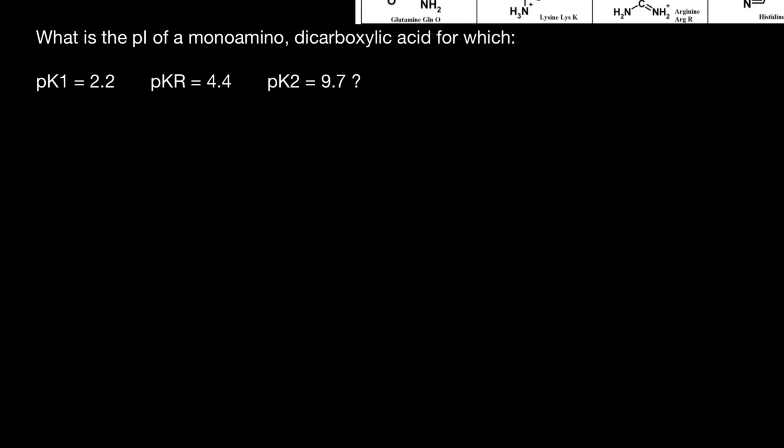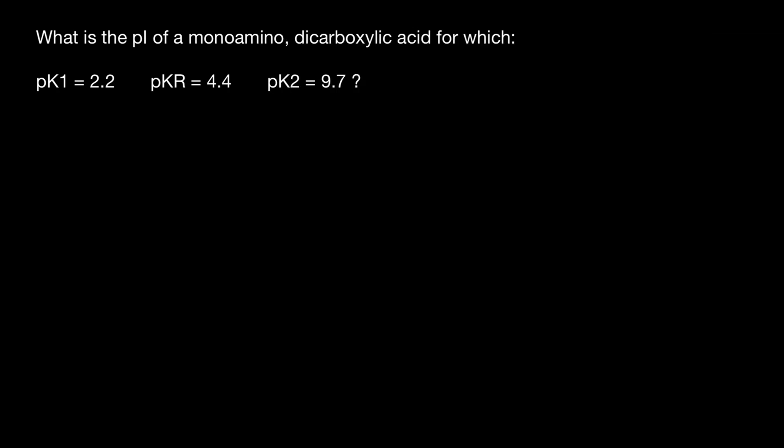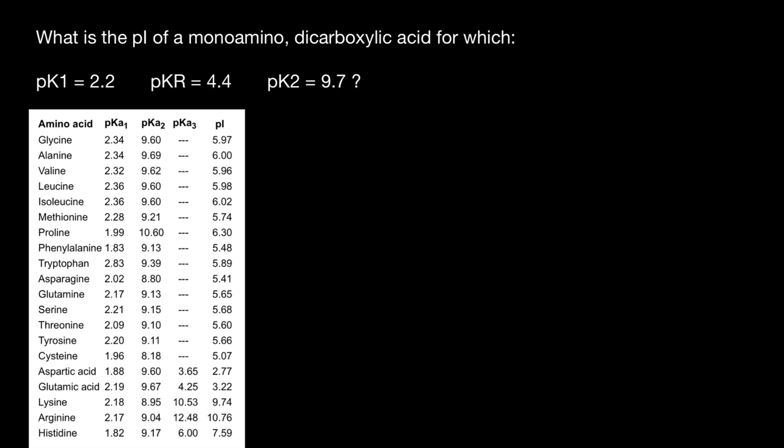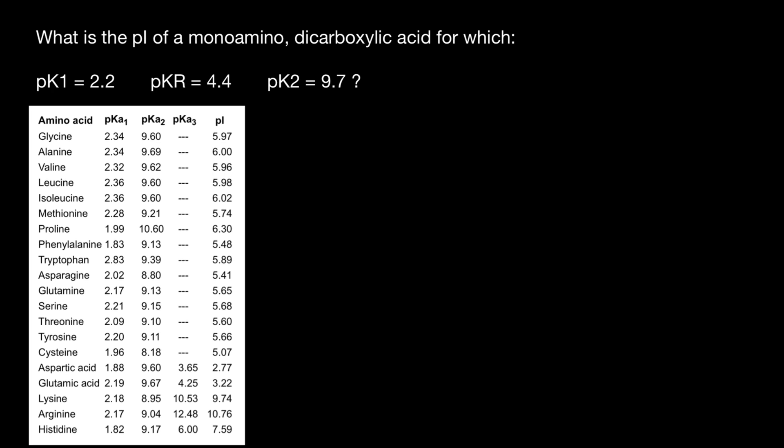Now, in order to solve this problem, we don't need this table, but I still want to show you this table so you would know what we are dealing with here. And you see, here's the table, we have pKa1, pKa2, pKa3, and the isoelectric point for the amino acid.